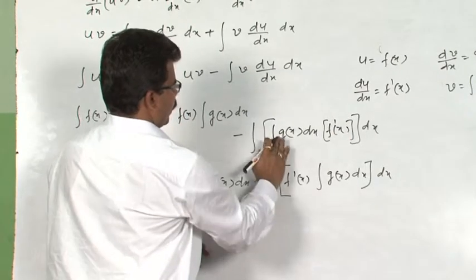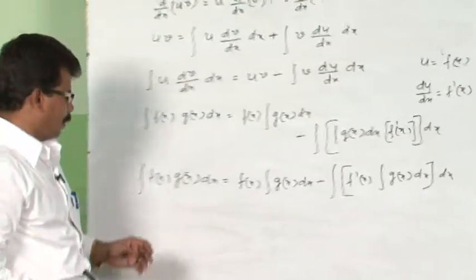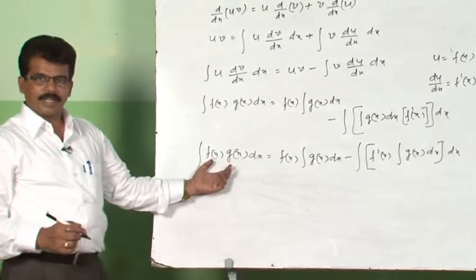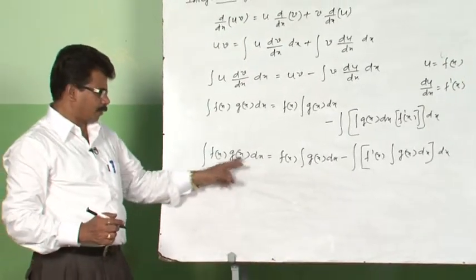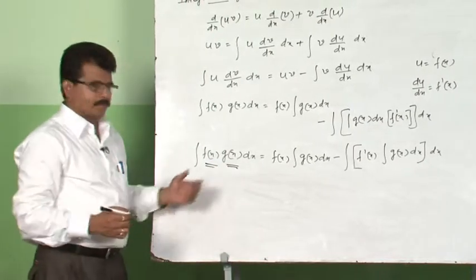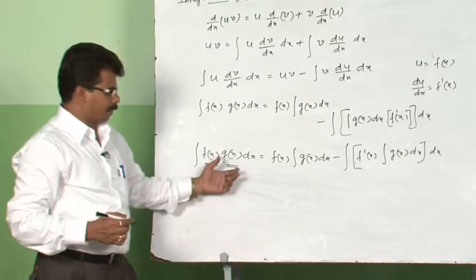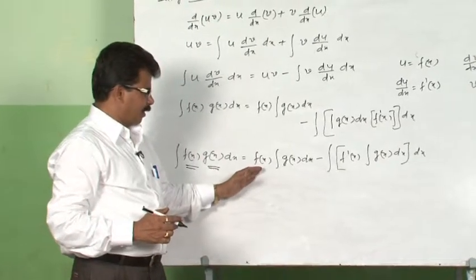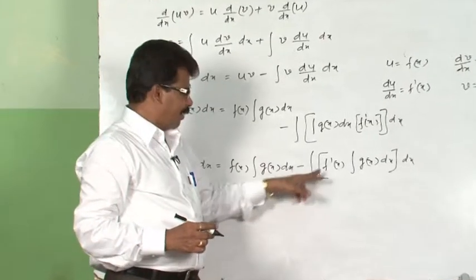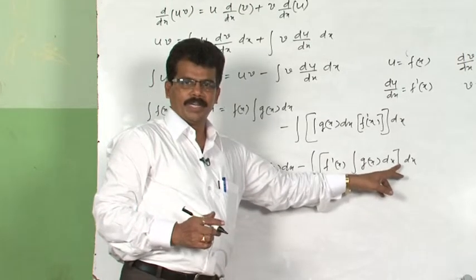This f(x) I have written here and ∫g(x)dx I have written here. Therefore, if the given integrand is a product of two functions f(x) and g(x), the formula will be: first function × integral of second function, minus integral of [derivative of first function × integral of second function] dx.